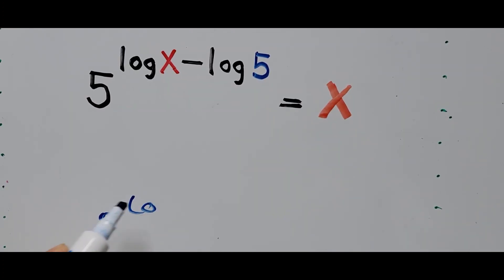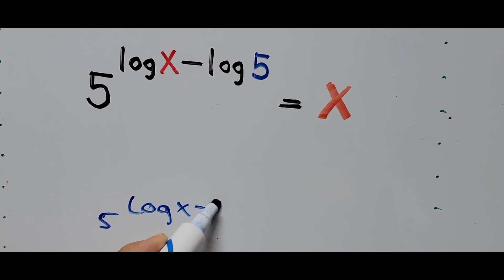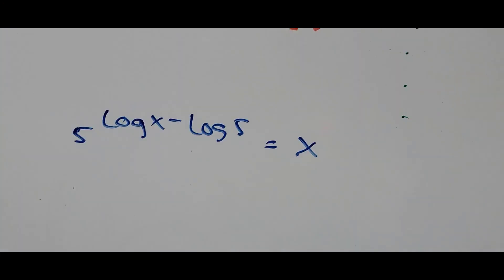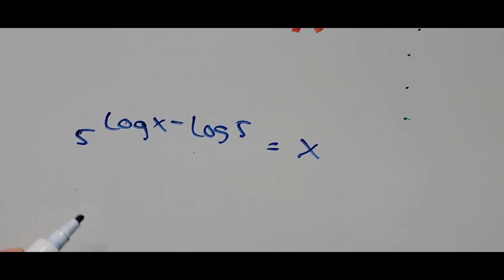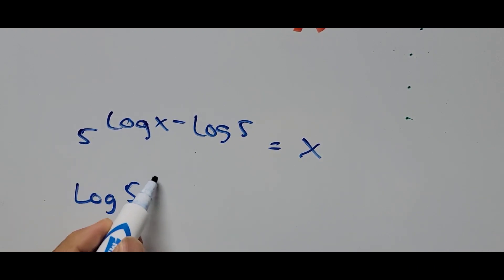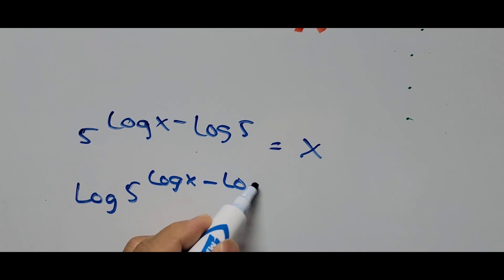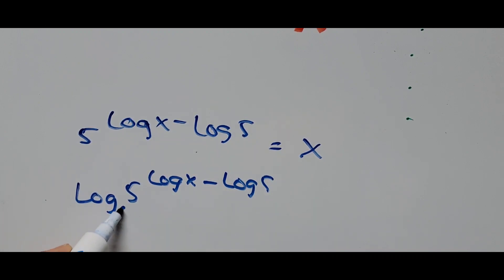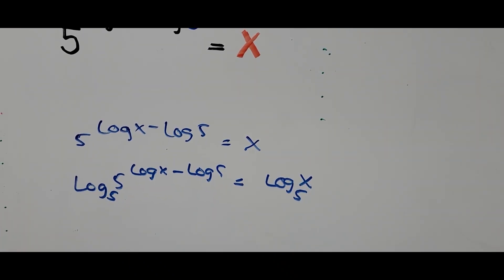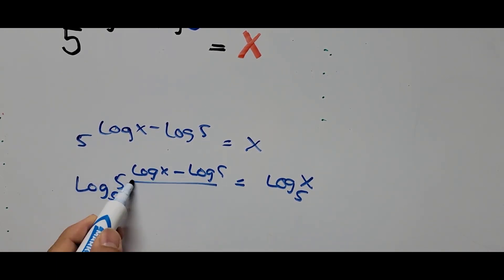5 raised to log of X minus log of 5 equals X. In solving the problem, we'll be using the common logarithm and the laws of common logarithm. We're creating log on both sides of the equation. Now: log of 5 raised to the power (log of X minus log of 5), that's to base 5, equals log of X to base 5. From here we use the exponent rule, bringing the exponent down to the front as a coefficient.